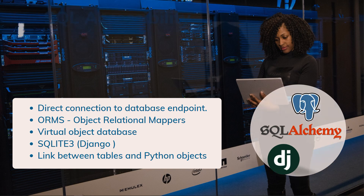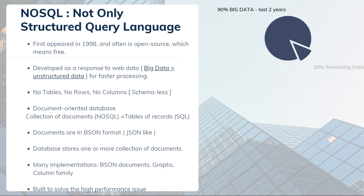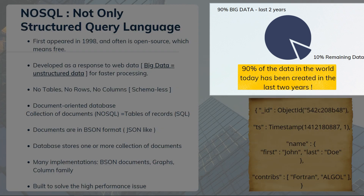Now let's move on to NoSQL database management systems. NoSQL is very different from traditional relational databases — there are no tables with columns and rows. NoSQL stands for 'Not Only Structured Query Language.' It first appeared in 1998 and is often open source. It was developed as a response to web data, big data, and unstructured data. The data is distributed across multiple read replicas rather than concentrated in one machine.